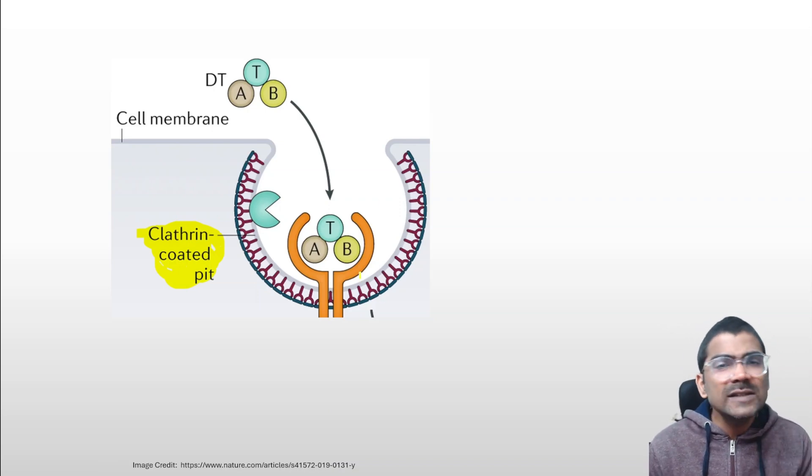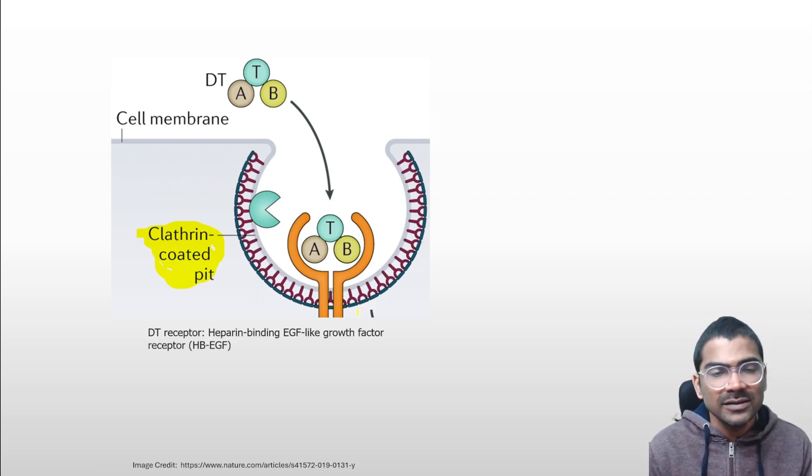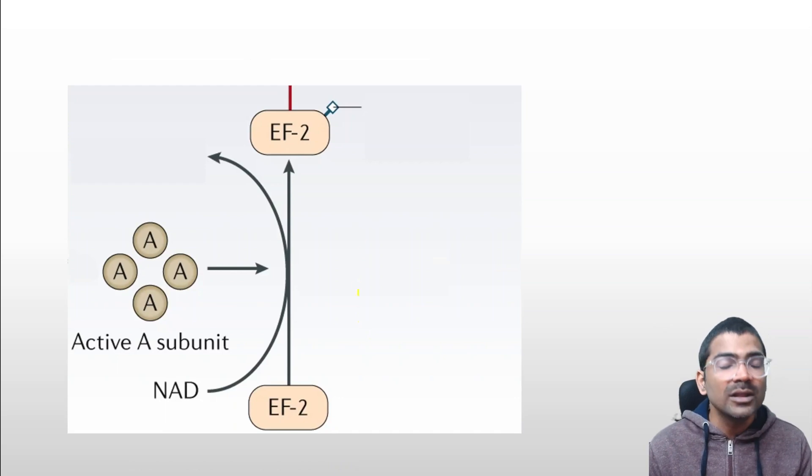Once it enters the cell, the catalytic domain of the active subunit acts on elongation factor 2, which is important for protein synthesis.